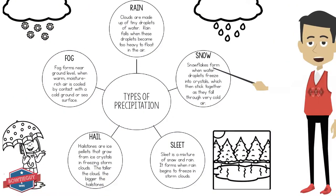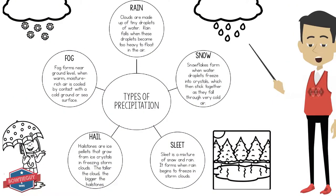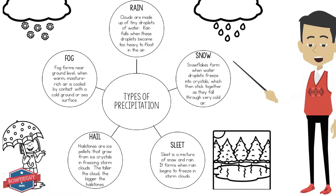There are many different types of precipitation: fog, rain, snow, hail, and sleet. Rain — clouds are made up of tiny droplets of water. Rain falls when these droplets become too heavy to float in the air.